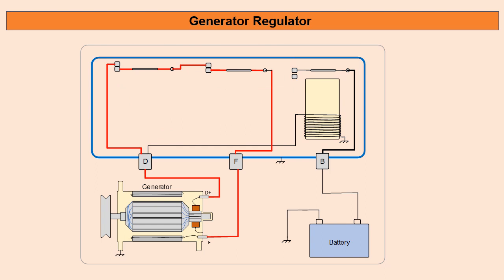We'll start by having a look at how the D and F terminals are connected together. The D plus from the generator goes to the D of the regulator. You can see that it goes through a couple of sets of contacts and then straight out to the F terminal and back to the field circuit of the generator.